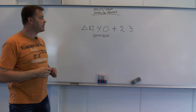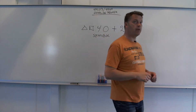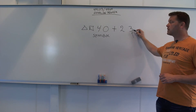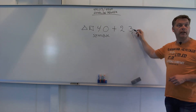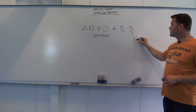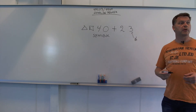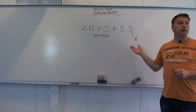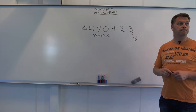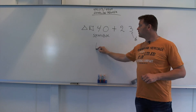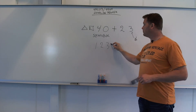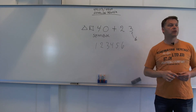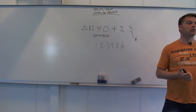Det er faktisk tilfældigt, at det vi kalder værdien 3, at det ser sådan ud. Den værdi 3 kunne ligeså godt have set anderledes ud i princippet. Det er bare et eller andet tegn for at visualisere en værdi. Men når vi ser sådan nogle symboler her, så forbinder vi det helt automatisk med navnene og talværdierne.